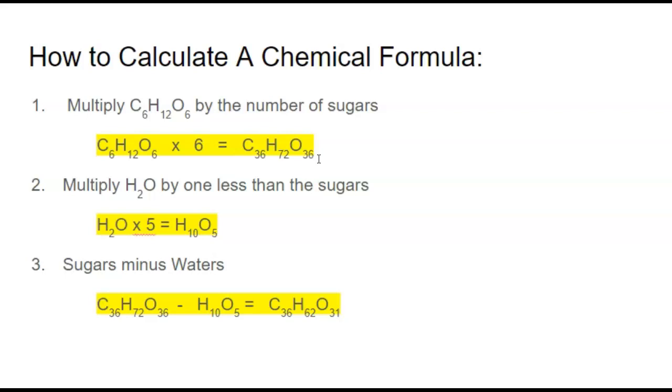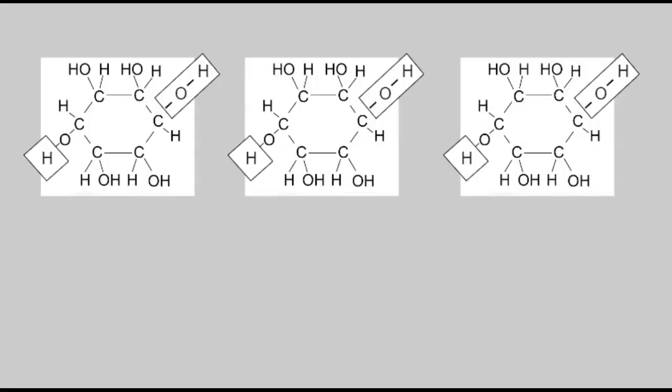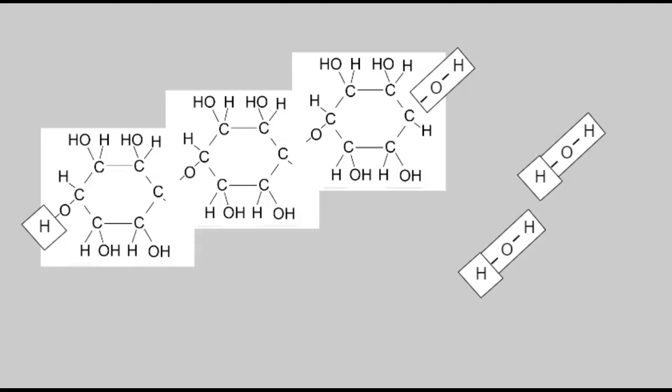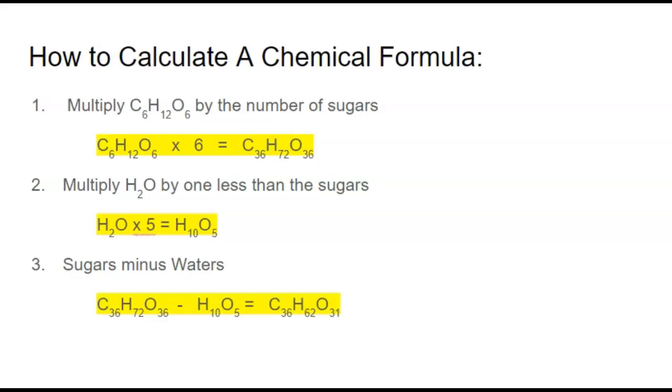But remember, we had to remove water. We always have to remove one less water than there are sugar molecules. In this instance, to connect three molecules, we had to remove two waters. So if I go back to this formula, we have to figure out how many waters are going to be removed. There's always going to be one less water removed than the sugar. So I'm going to say I got to remove five waters. Water is H2O, so I'm going to multiply that by five. I've got two H's, so two times five is ten. There's no number next to O, which means there's five, so H10O5.